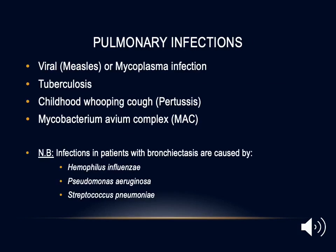Certain pulmonary infections cause severe lung damage, leading to impaired drainage and frequent subsequent infections. We must differentiate these precipitating infections — caused by measles, mycoplasma, tuberculosis, whooping cough, and mycobacterium avium complex — from the organisms usually seen in bronchiectasis exacerbations, such as Haemophilus influenzae, Pseudomonas aeruginosa, and Streptococcus pneumoniae. After frequent infections from these organisms — due to impaired drainage caused by the childhood or adulthood infection — patients develop bronchiectasis and then bronchiectasis exacerbations.